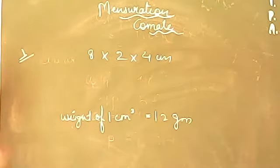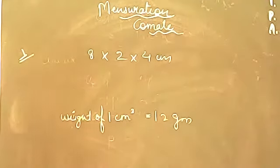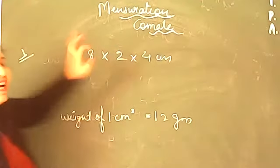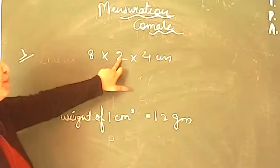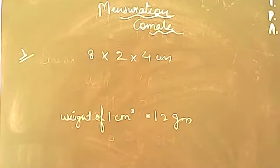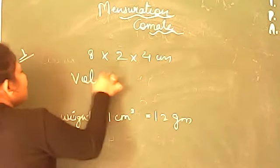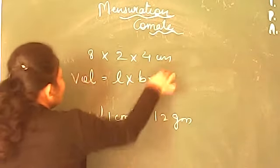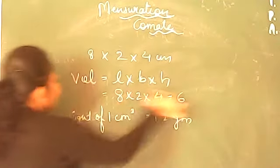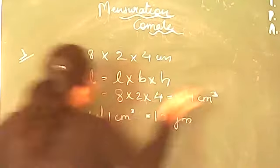Weight of one centimeter cube iron is 12 grams. The dimensions given for the cuboidal box are 8 × 2 × 4, meaning length, breadth, and height respectively. Since we are talking about how much material the cuboidal box is made of, we need the full volume. So the formula is L × B × H = 8 × 2 × 4 = 64 cubic centimeters.